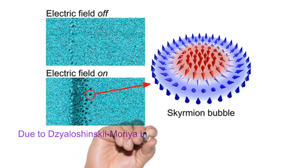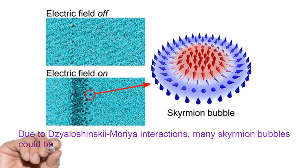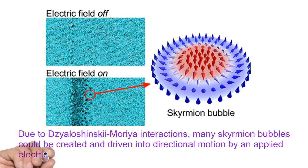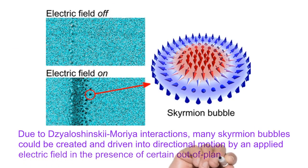Due to DM interactions, many skyrmion bubbles could be created and driven into directional motion by an applied electric field in the presence of a certain out-of-plane magnetic field.